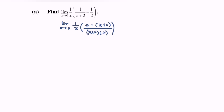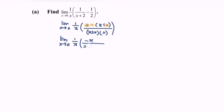Kindly simplify. So the limit when x approaches 0 for the function 1 over x — focus on this part — 2 minus 2 gives us 0 in the numerator. After simplifying, we have negative x over 2(x plus 2).